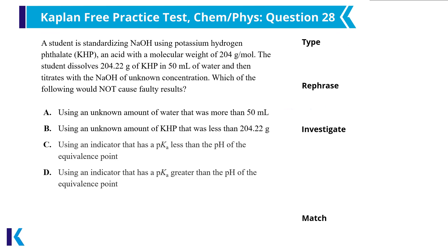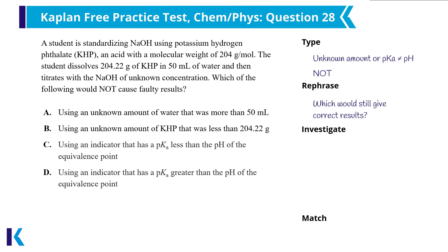The answer choices for question 28 are short sentences — two about unknown amounts and two about an indicator's pKa versus the equivalence point. Most importantly, this is a NOT question, which makes me hesitate for a second. Normally, if two answer choices are perfect opposites like C and D, one of them is probably right. However, since this is a NOT question, I want to be careful of overusing that trend. Based on the question stem and answer choices, this question is asking whether an incorrect amount of something, or an incorrect match between indicator pKa and equivalence point, could still give correct results. All that really matters is that KHP is being used to determine the concentration of an unknown concentration of sodium hydroxide.